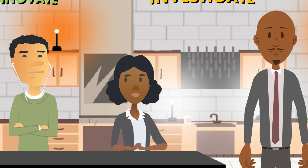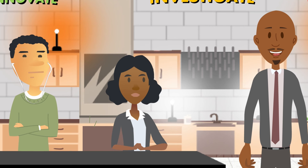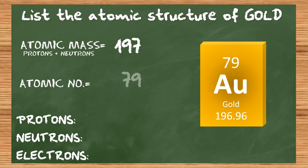Let's list the atomic structure of gold. Atomic mass: 197. Atomic number: 79. How many protons? 79. How many electrons? It's neutral, so 79. What about neutrons? Subtract: 118. Very good.